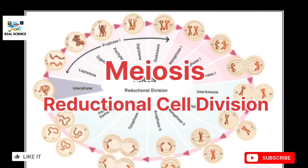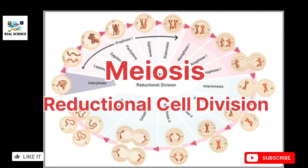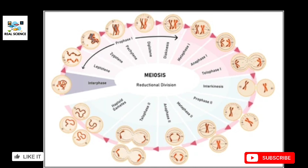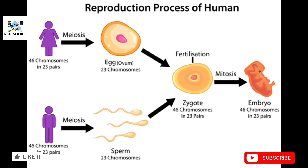Good morning dear students. This video is about meiosis, the reductional cell division. This division is responsible for the formation of human male and female gametes. In most animals, gametes are formed by meiosis. Human male gametes are sperms and human female gametes are oocytes or ovum, which contain only 23 chromosomes. When these two combine, fertilization occurs, forming a zygote with 46 chromosomes or 23 pairs.